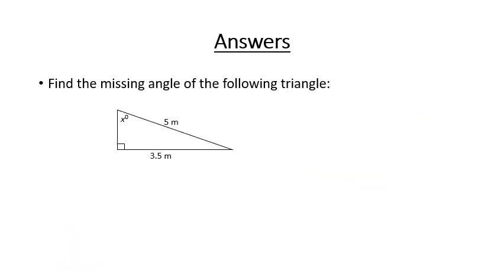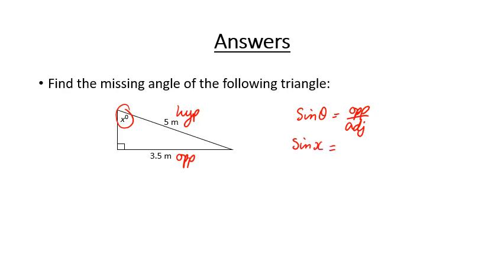With this last one, we have to find the missing angle theta. We've got our hypotenuse and our opposite, so we're going to use sine. Sine of theta equals opposite over hypotenuse. Sine of x equals 3.5 over 5. Working out 3.5 divided by 5 gives 0.7, then using the second function: sine⁻¹(0.7), so x equals 44.4 degrees.